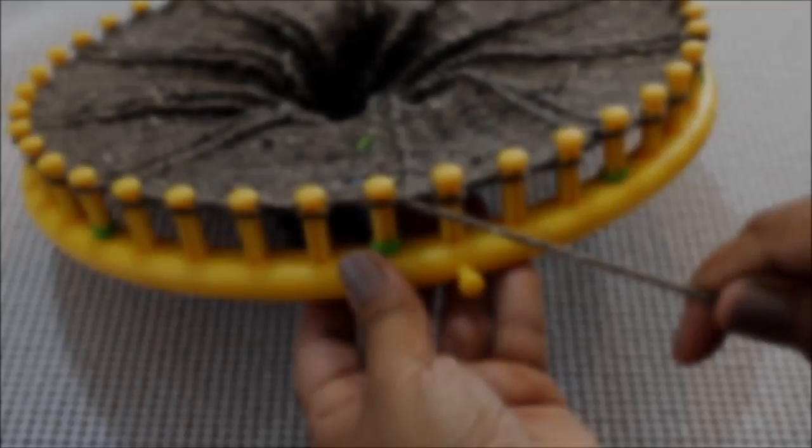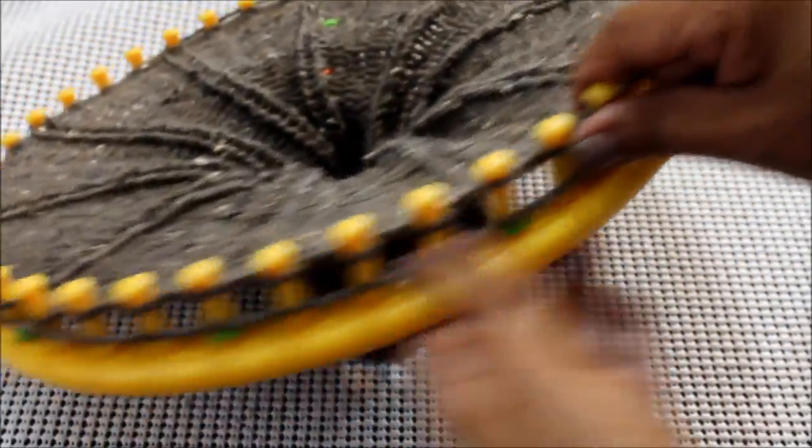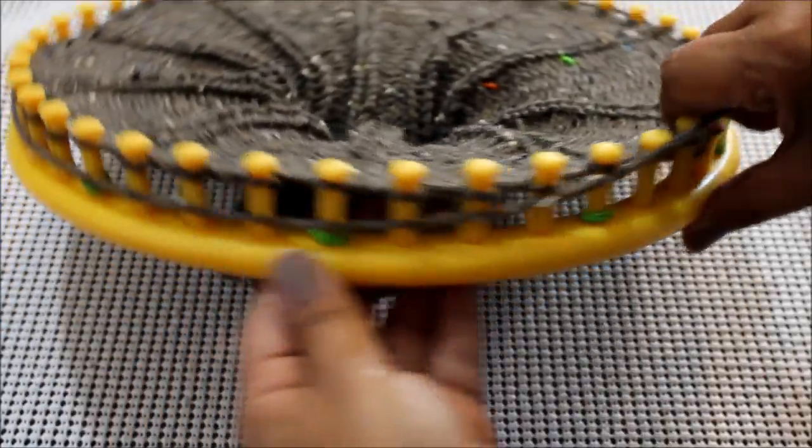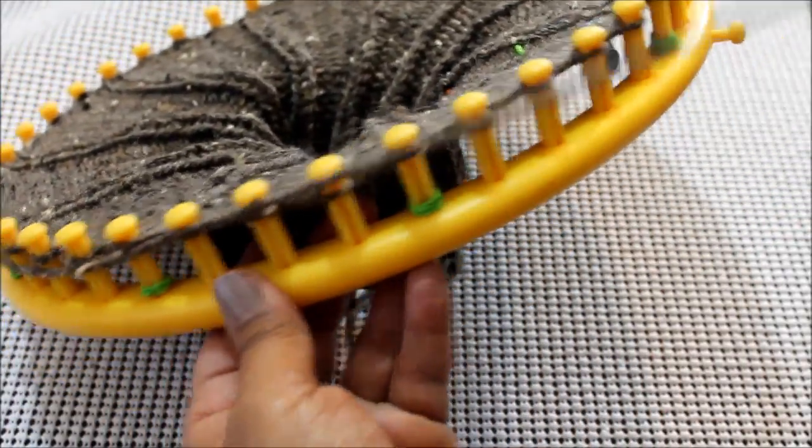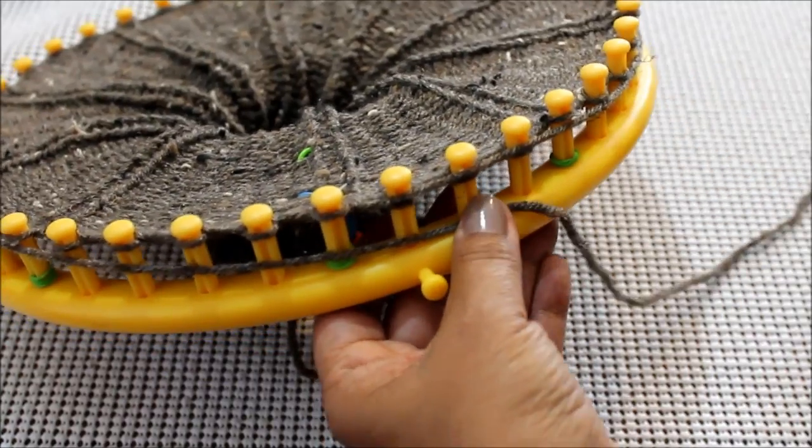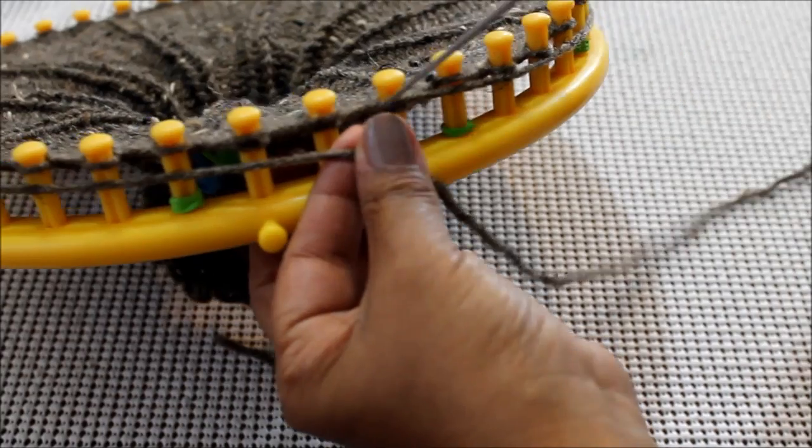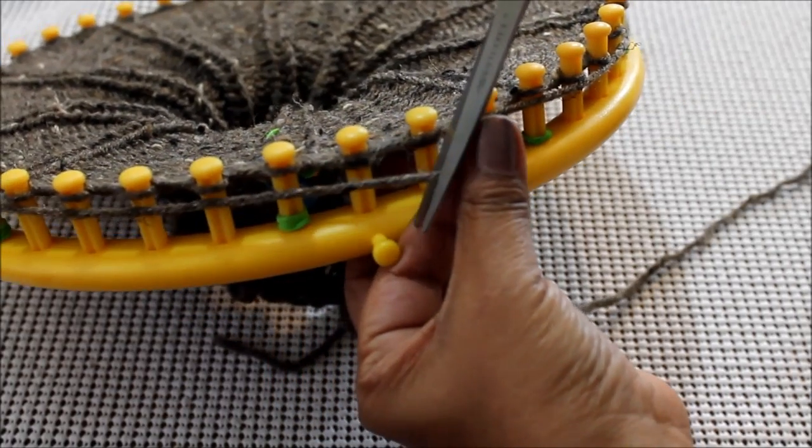Now take your working yarn and wrap it around the loom all the way around until you come right back to that front part where your anchor peg is. A little bit past it, like at about the second peg, second or third, and then cut that working yarn.